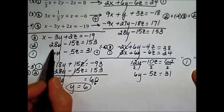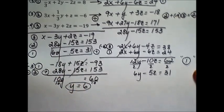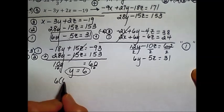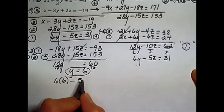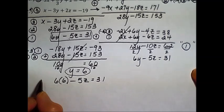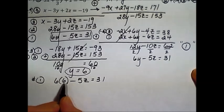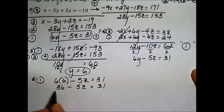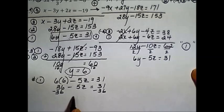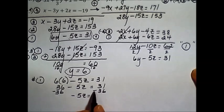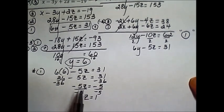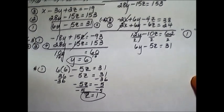So I'm going to use this equation, since it has y in it and only one other variable, to find what the z is. So replacing the y with the value I just found: 6y minus 5z equals 31. I have 36 minus 5z equals 31. Subtract 36 from each side, leaves us with negative 5z; 31 minus 36 is negative 5. Divide by negative 5 on each side, and we have z equals 1.